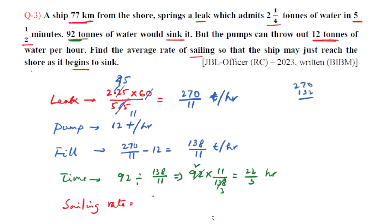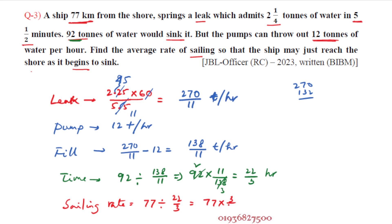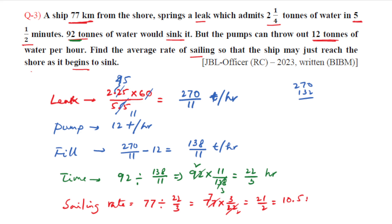The time to sink is 92 divided by (138/11), which gives 92 into 11/138, simplifying to 22/3 hours. The required average speed is distance divided by time: 77 divided by (22/3) equals 77 multiplied by 3/22, which equals 10.5 kilometers per hour.